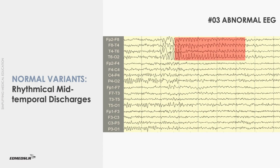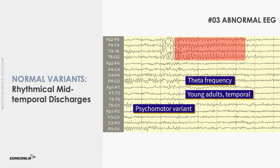Rhythmic mid-temporal discharges appear as bursts of rhythmical sharp waves which can have sharp, flat-topped, or notched appearance and last for a few seconds. They usually have theta frequency and variable amplitude. They are mostly seen in young adults during drowsiness in the temporal region, unilaterally or bilaterally in an independent manner.